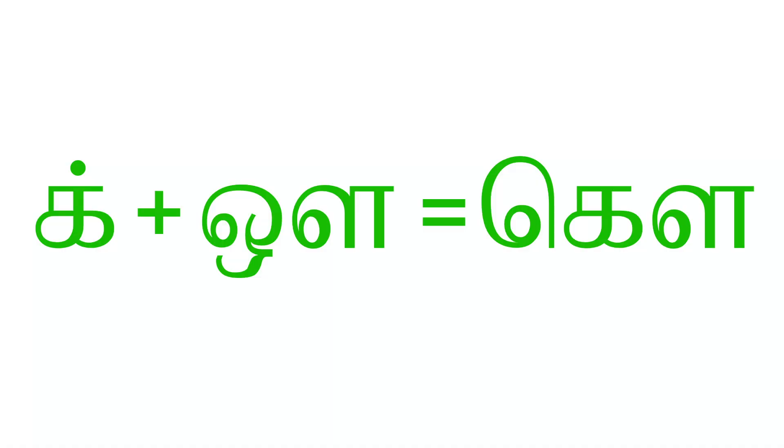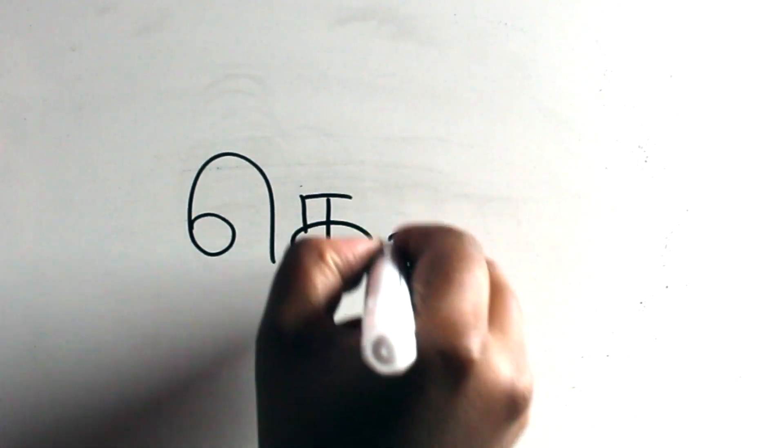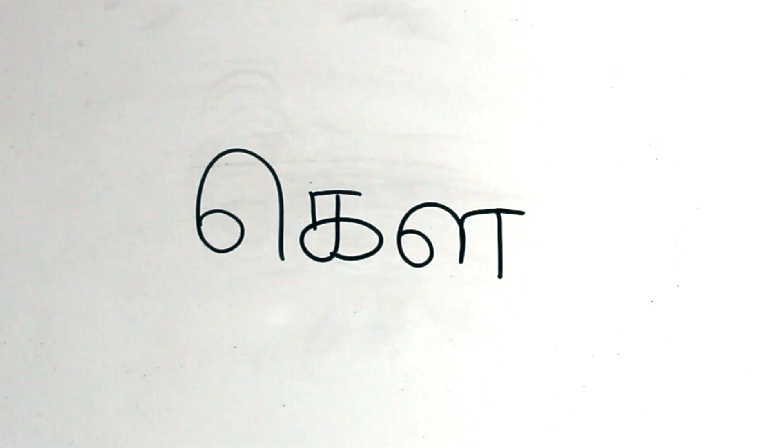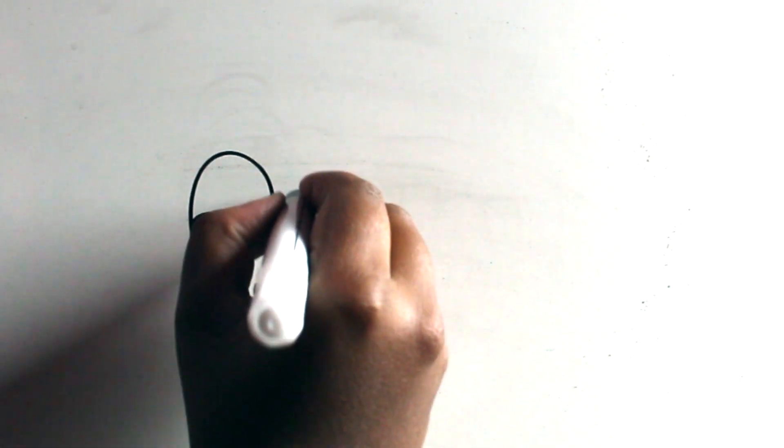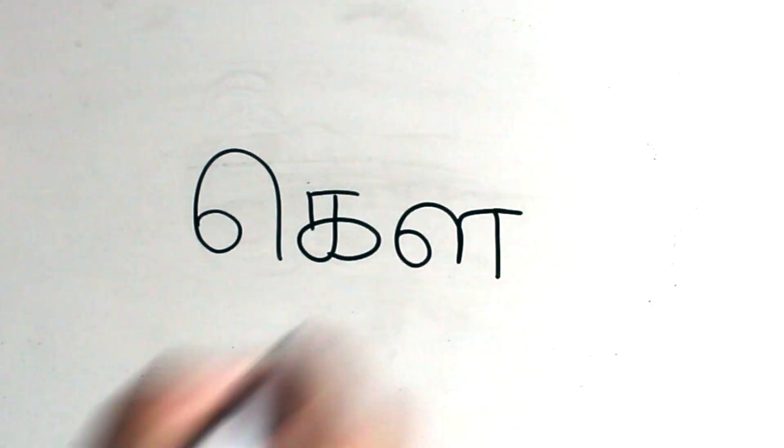Our last letter for this video is kau. Combining ik and au makes kau. To write kau you first start off by writing otta combo and then ka followed by the letter la. This gives you kau. Again: otta combo, ka and la. There we go. Well done.